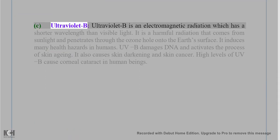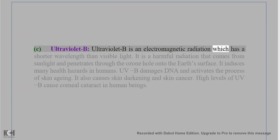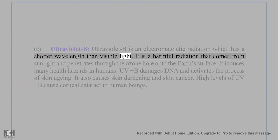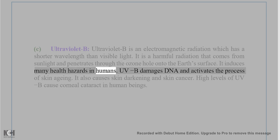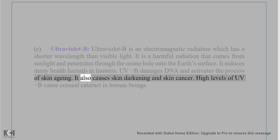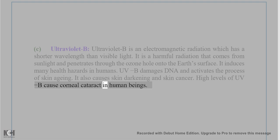(c) Ultraviolet B: UV-B is an electromagnetic radiation with a shorter wavelength than visible light. It is a harmful radiation that comes from sunlight and penetrates through the ozone hole onto the earth's surface, inducing many health hazards in humans. UV-B damages DNA and activates the process of skin aging. It also causes skin darkening and skin cancer. High levels of UV-B cause corneal cataract in human beings.